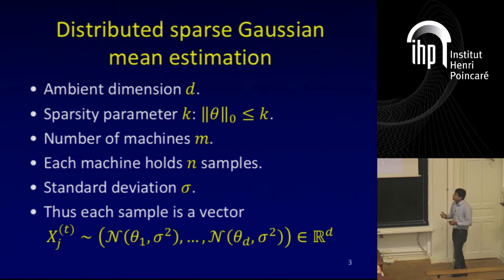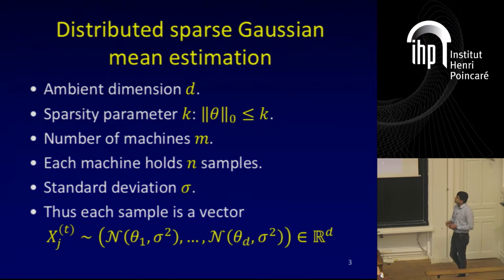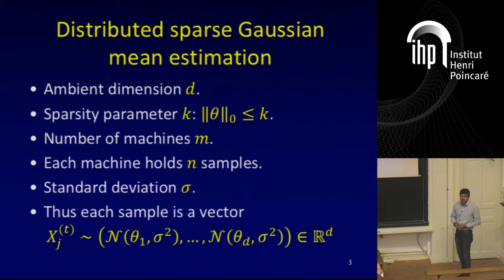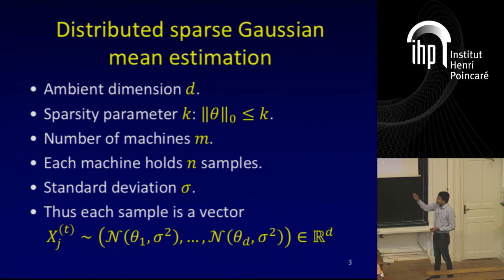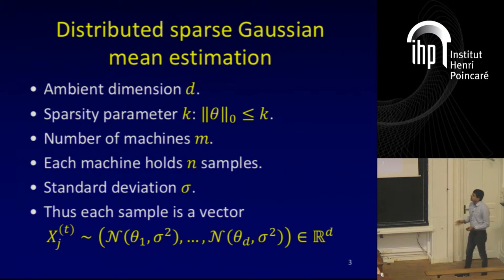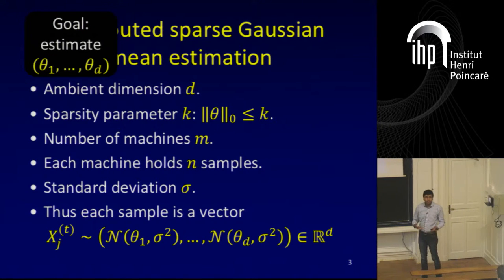There is an ambient dimension d, so the Gaussian distribution is in R^d. There is a sparsity parameter k — the mean theta, which is a vector in R^d, will have only k nonzero coordinates. The number of machines is m. Each machine holds n samples from the distribution. The standard deviation of the Gaussian distribution in each coordinate is sigma. For example, a particular sample x_{j,t} — the t-th sample that machine j gets — has each coordinate as an independent Gaussian with standard deviation sigma and mean theta_i. The goal is to estimate theta_1 through theta_d by communicating.